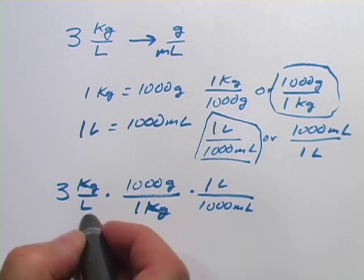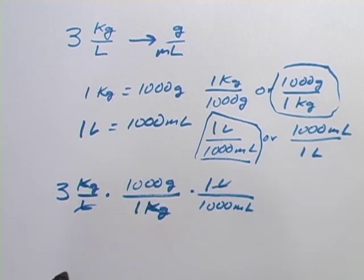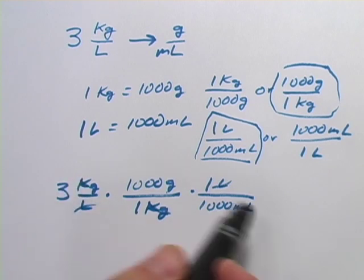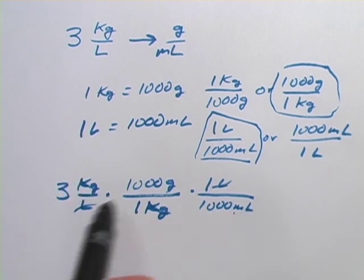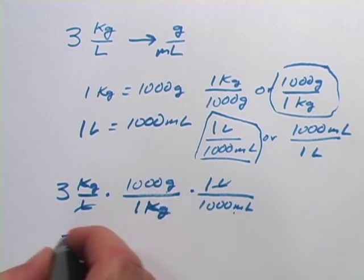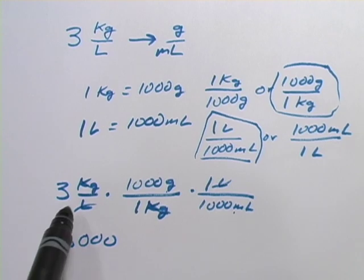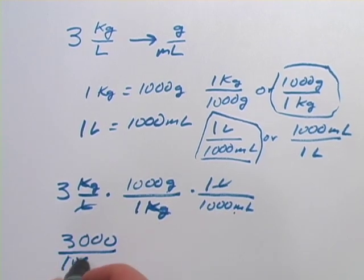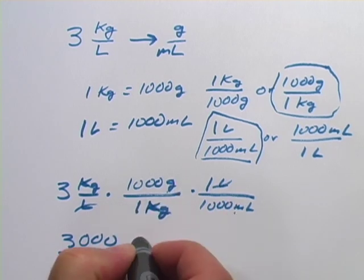Now this is all set up. I can cancel my liters. What I'm going to end up with is just grams over milliliters. Those are the only units left. And now I just have to do the math here. This is three times a thousand times one. That's on the top. So that's 3000. And it's one times a thousand on the bottom. So that's 1000.